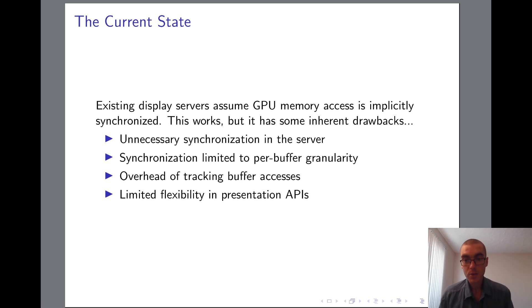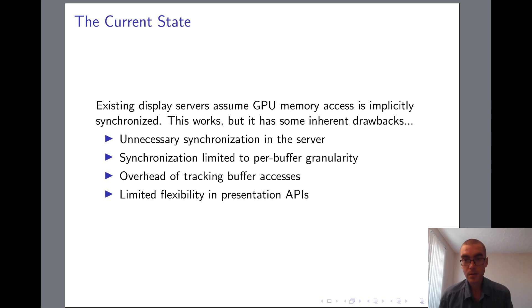One big advantage of this approach is that it simplifies things significantly on the user space side. For the most part, the display server doesn't need to worry about synchronizing GPU operations. However, it also has some drawbacks. For one, it can lead to unnecessary synchronization. Suppose multiple clients submit buffers for presentation, and the server reads from each one to composite them together into the final desktop image. With implicit synchronization, it will be forced to wait for all of those clients' rendering to complete each frame, meaning that the frame rate of the entire desktop will be effectively limited to the frame rate of the slowest rendering client.